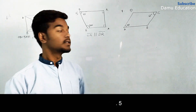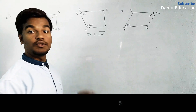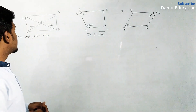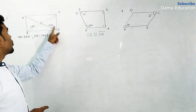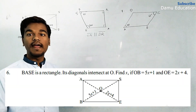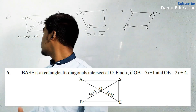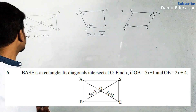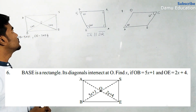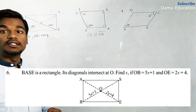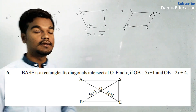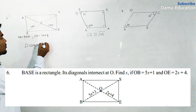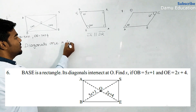Now for the sixth question: they are given rectangle ABCD, and the distances OP and OE — the two diagonals — are given as 5x+1 and 2x+4. In a rectangle, the two diagonals are equal in length, so the diagonals are the same length.